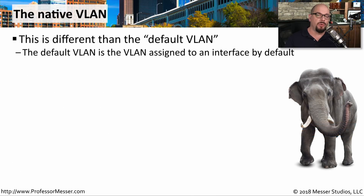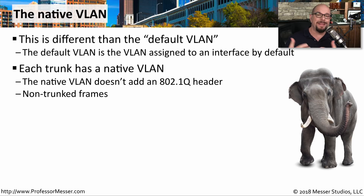If you're configuring a network switch, one of those configuration settings for an interface that you're connecting to someone's laptop or desktop computer will be assigned to a particular VLAN. If you don't specifically assign an interface to a VLAN, then that interface will use the default VLAN. But there's another type of VLAN called the native VLAN. This is used when you're trunking different switches together. If you're sending traffic across a trunk, and that particular traffic belongs to the native VLAN, then a 802.1q header will not be added to any of that traffic as it goes across the trunk. You might also hear these referred to as non-trunked frames.